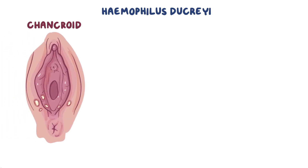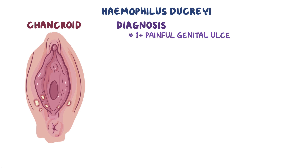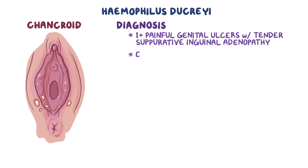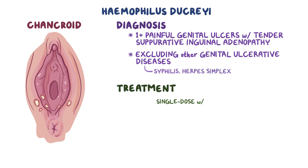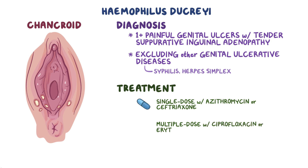Haemophilus ducreyi causes a sexually transmitted disease called chancroid, which is usually diagnosed on the basis of clinical findings — one or more painful genital ulcers with tender suppurative inguinal adenopathy — and by excluding other genital ulcerative diseases such as syphilis or herpes simplex virus infection. It is treated with single-dose therapy using azithromycin or ceftriaxone, or with multiple-dose therapy using ciprofloxacin or erythromycin.